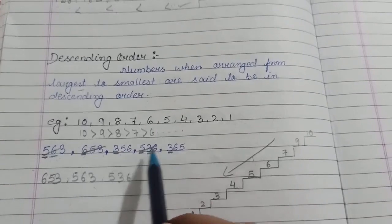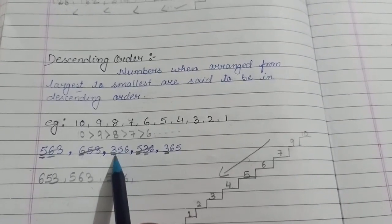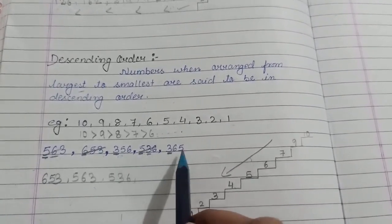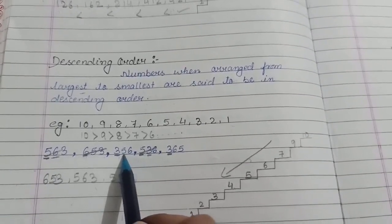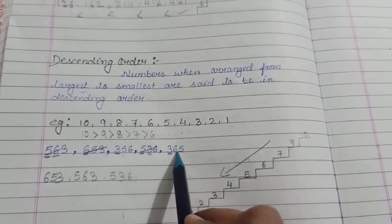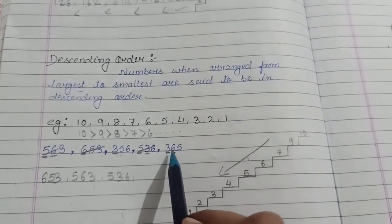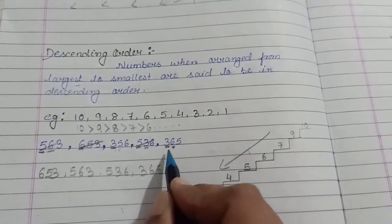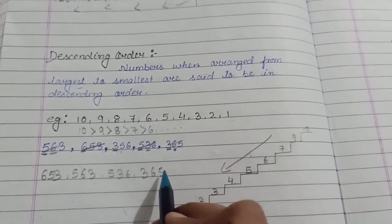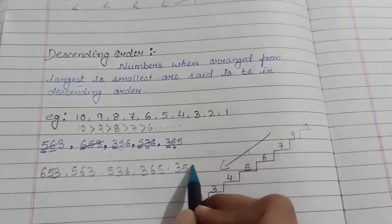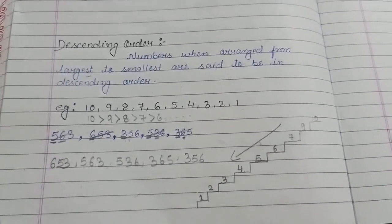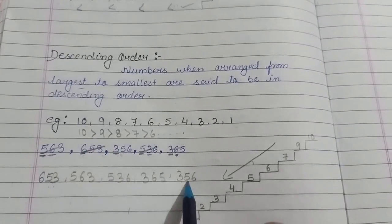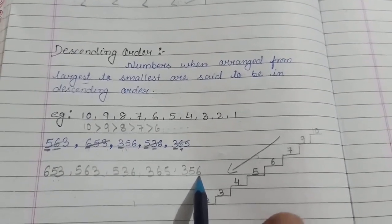Now we will compare among these two remaining numbers. Here also 3 at hundreds place, here also 3 at hundreds place, so we will compare with tens place. Here it is 5 and here it is 6. Which one is the bigger number? 6 is the bigger number. So we will write 365 first and then at last we will write 356. So 653 is the largest number and 356 is the smallest number.